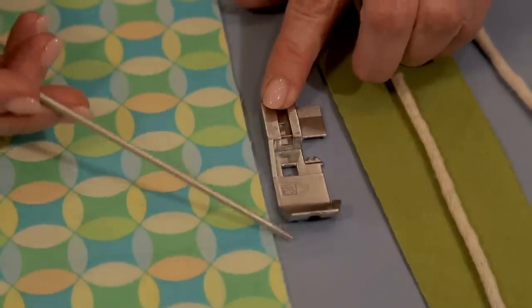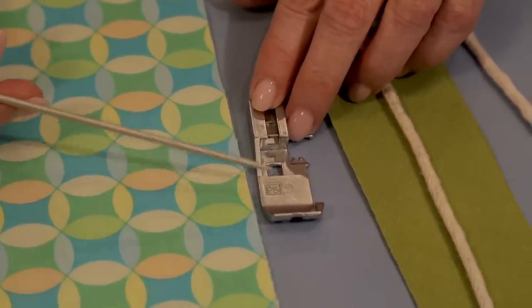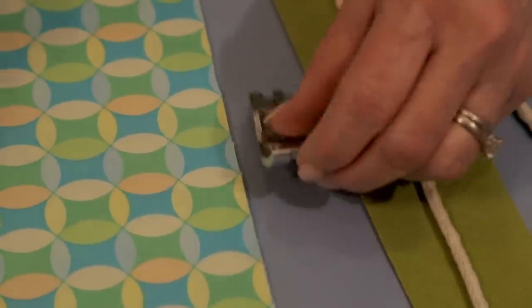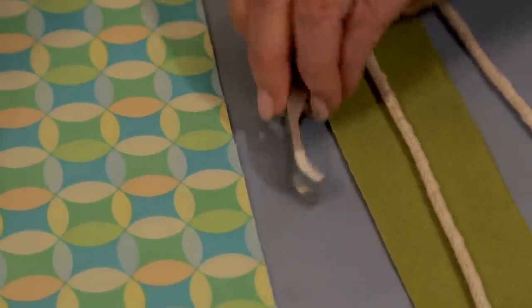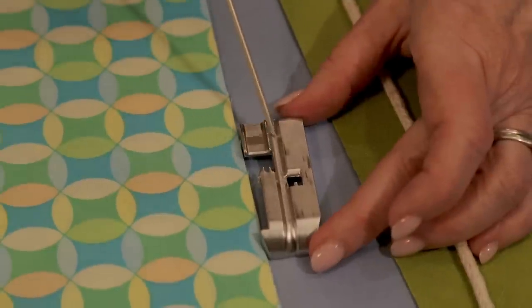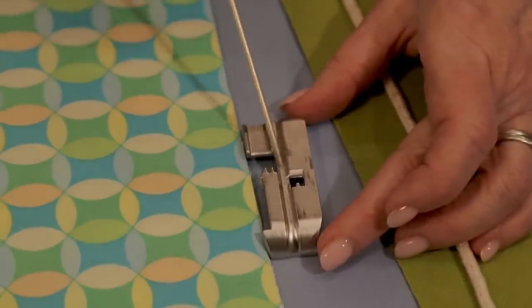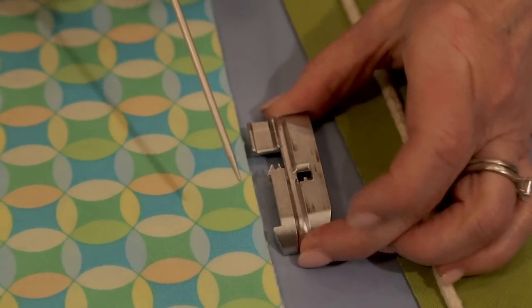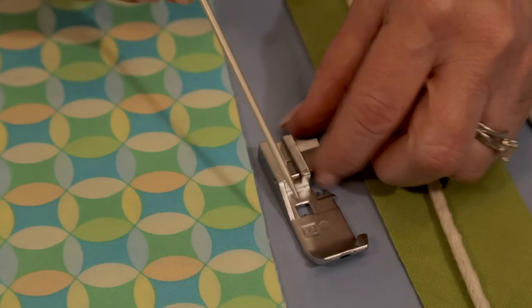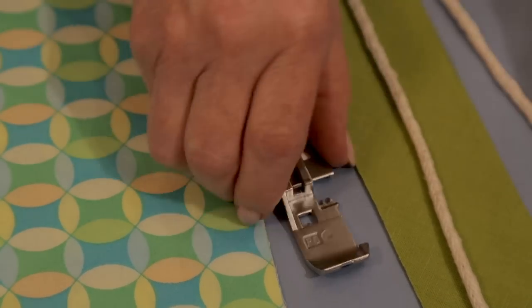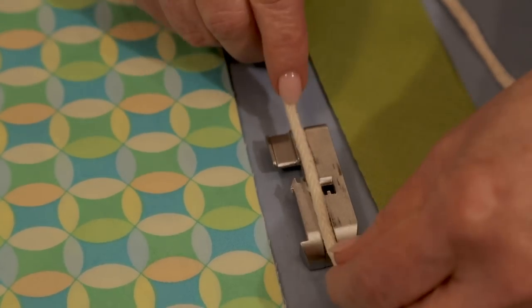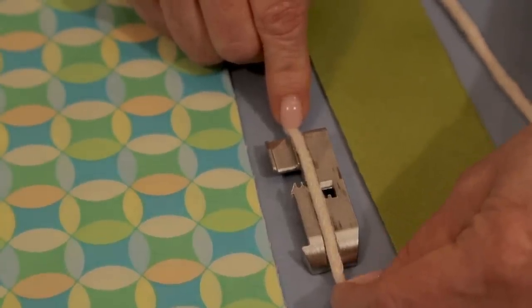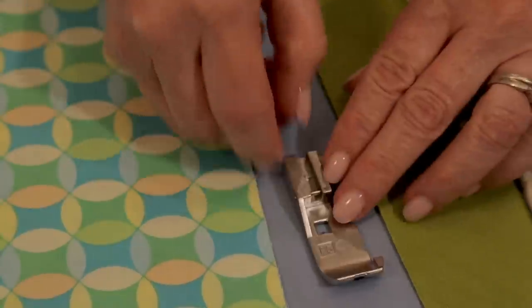The star of this tip clip is the cording foot or the piping foot. Some companies may call it a piping foot, cording foot - it's all the same thing. But the thing that's kind of nifty about it and makes it so cool to use is this channel that runs along the bottom. Now this is a five millimeter wide channel. Some machines have a three millimeter wide, some may vary and have different sizes, but this one is five millimeters. Let me just show you how the cording is going to fit right in there and run along very easily. When the foot is put down, we'll go to the machine and show you that great foot in action.